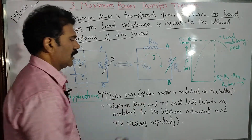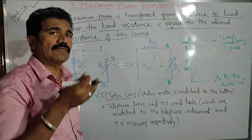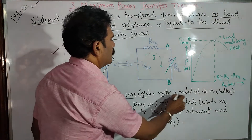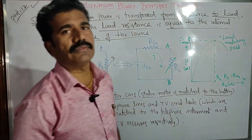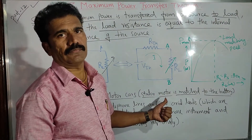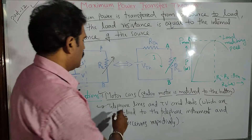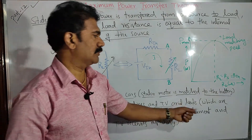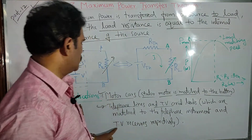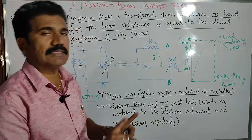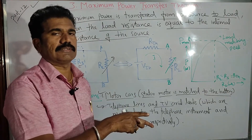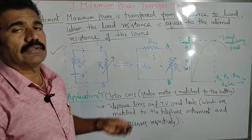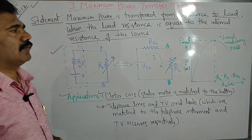Consider the example of motor cars. In order to start the car, maximum power must be extracted from the battery; otherwise we cannot start the car. The starter motor is matched to the battery, so with this condition we can start the motor car. Similarly, in the case of telephone lines and TV aerial leads, both should be matched in terms of power — they are matched to the telephone instrument and the TV receiver respectively. Various electrical applications can be understood with the help of this simple Maximum Power Transfer Theorem.